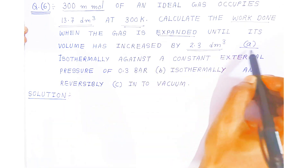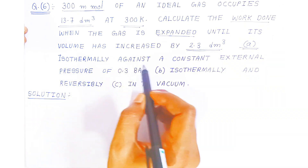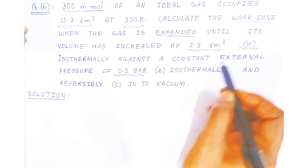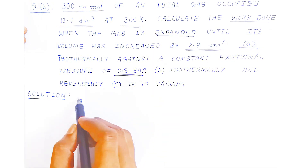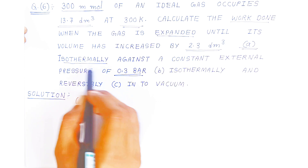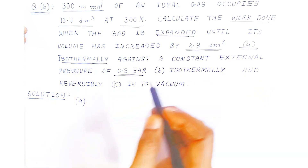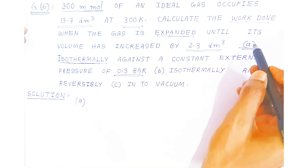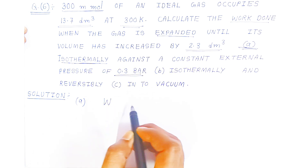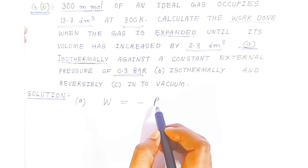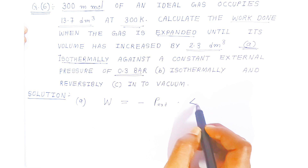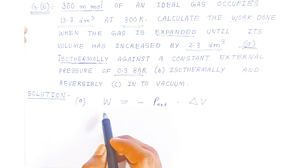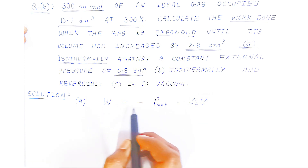Now here some conditions are given. The first condition is isothermally against a constant external pressure of 0.3 bar. So what will be the work done? Since in the first question the gas expands isothermally only one time, we are going to use the formula: w = -p_external × ΔV.